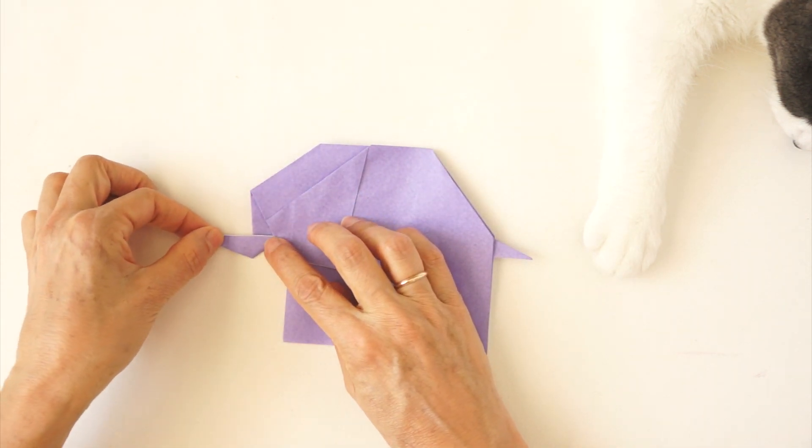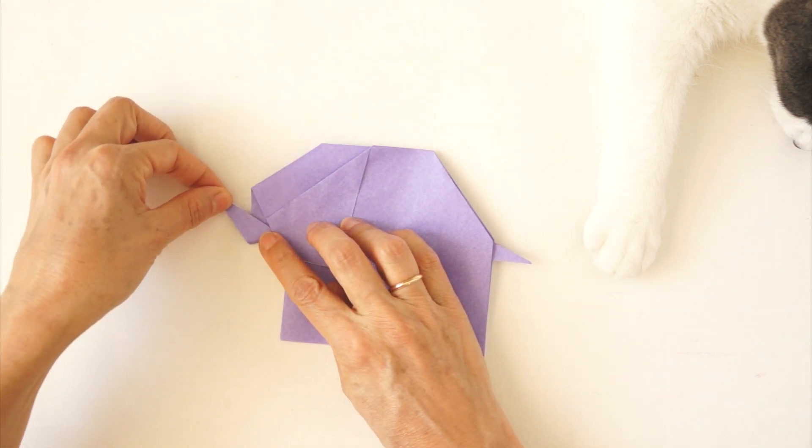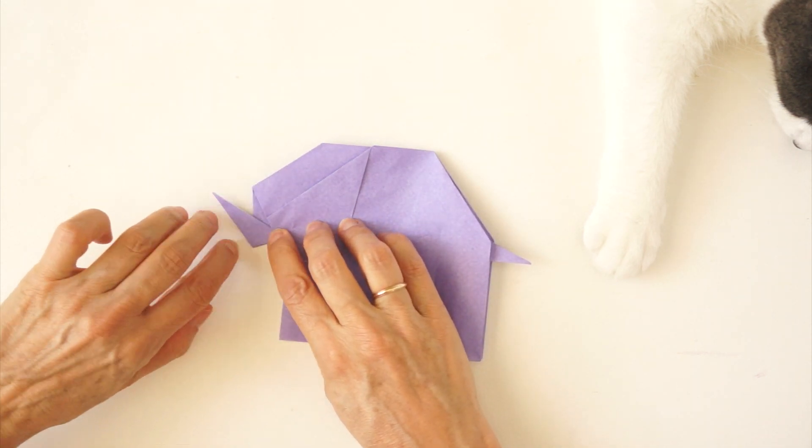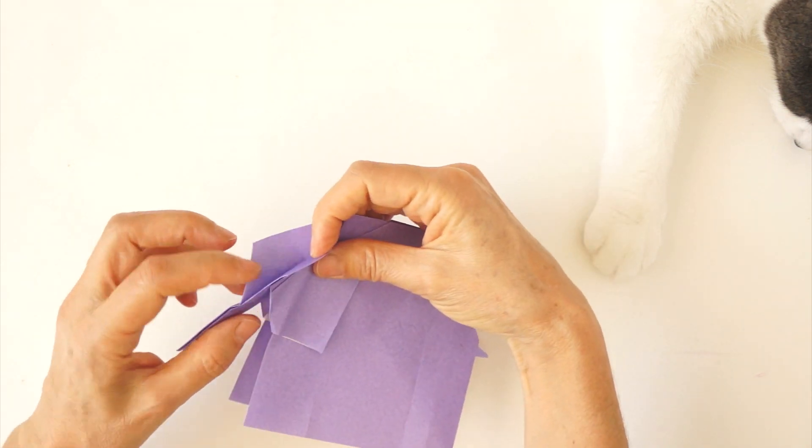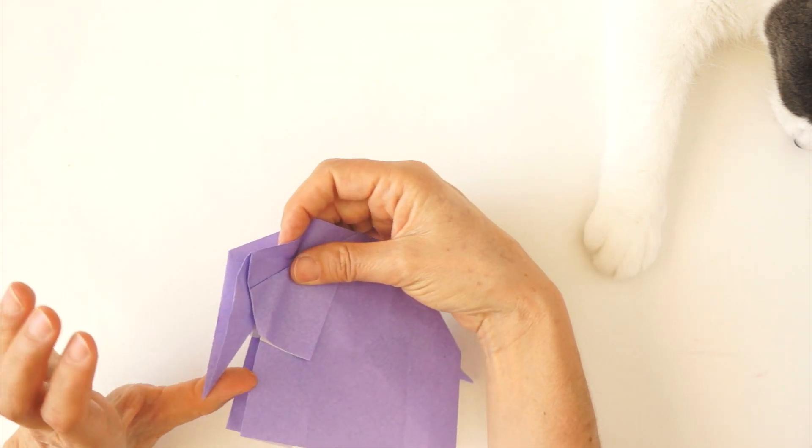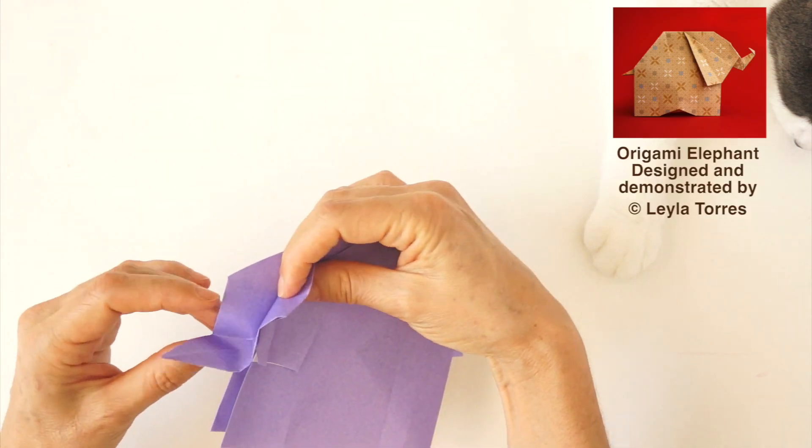Bring the trunk up however you prefer. Make a crease. Unfold. And press from below. Inside reverse.